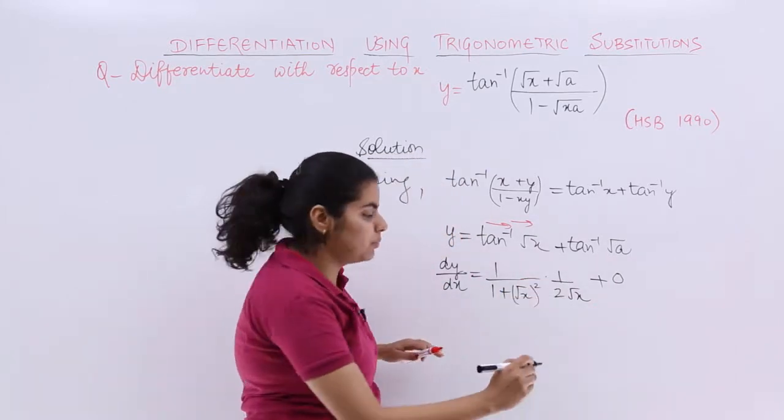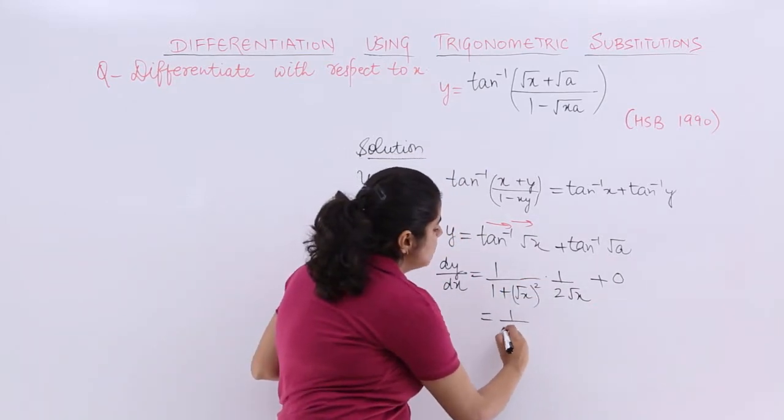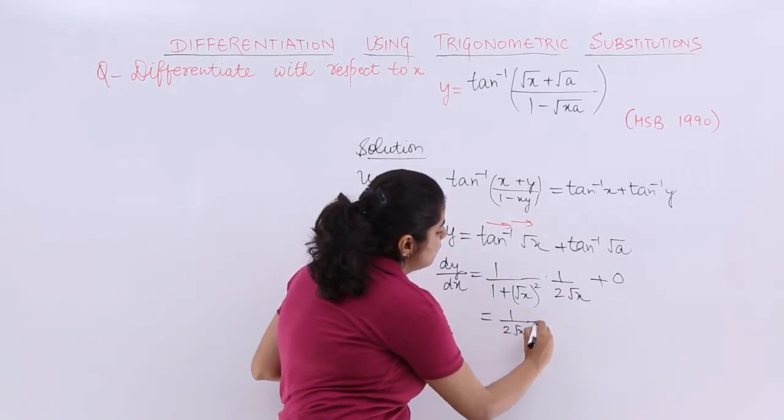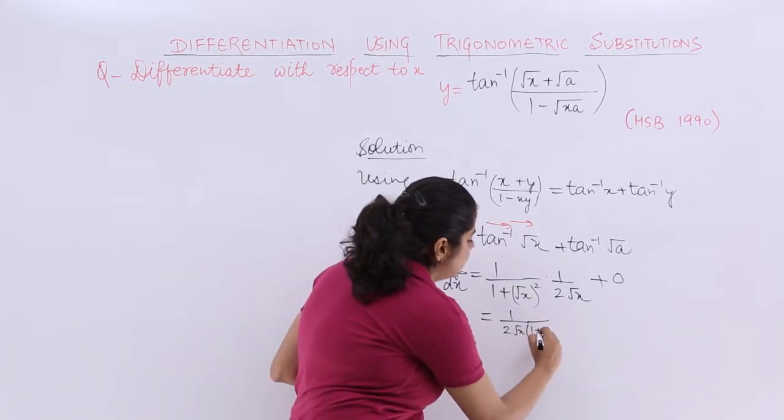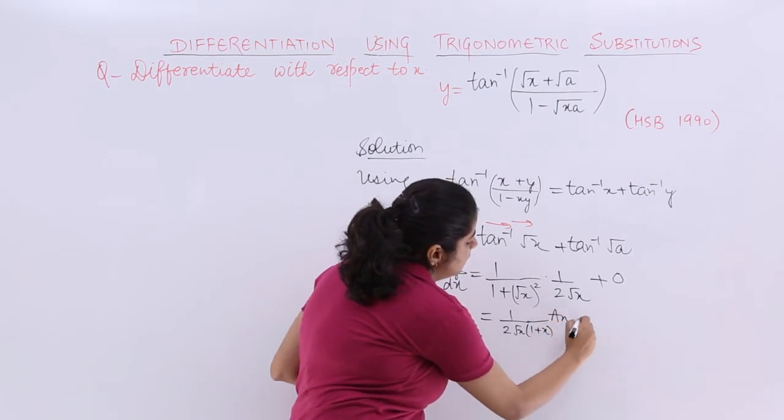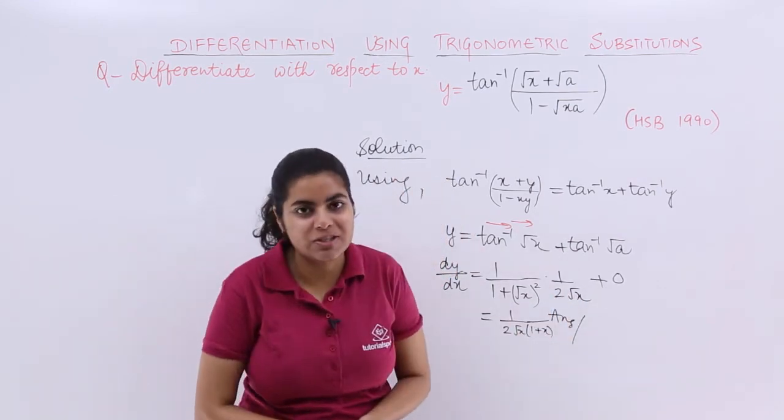So the answer is this. Let's simplify it more. dy/dx equals 1/(2√x) multiplied by 1/(1+(√x)²), which is 1/(1+x). That becomes my answer to this question.